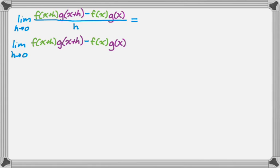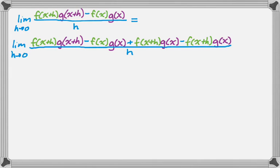So I have my original numerator, and then I'm going to stick on a plus f of x plus h times g of x minus f of x plus h times g of x, and then still all over h. I'm going to rearrange this a little bit now.